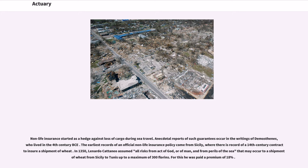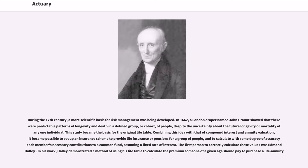Anecdotal reports of such guarantees occur in the writings of Demosthenes, who lived in the 4th century BCE. The earliest records of an official non-life insurance policy come from Sicily, where there is record of a 14th century contract to insure a shipment of wheat. In 1350, Leonardo Cattaneo assumed all risks from act of God, or of man, and from perils of the sea that may occur to a shipment of wheat from Sicily to Tunis up to a maximum of 300 florins. For this he was paid a premium of 18%.